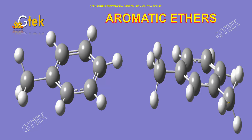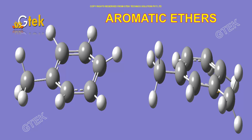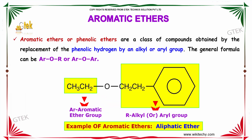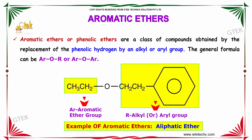Welcome to Gtech Techno Solutions Private Limited. Now we'll be studying about aromatic ethers. Aromatic ethers, or phenolic ethers, are a class of compounds obtained by the replacement of phenolic hydrogen by an alkyl or aryl group. The general formula can be Ar-O-R or Ar-O-Ar, where Ar represents an aromatic group and R represents an alkyl or aryl group.